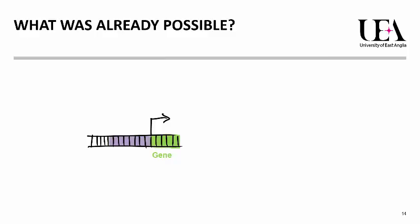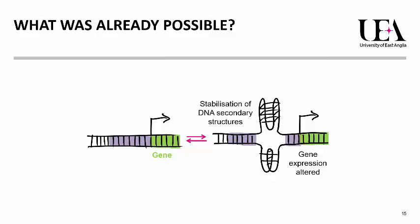We also know that iMotifs can affect how genes are read. Normal gene expression starts at a position in the genome called the transcription start site. Stabilisation of alternative DNA structures can alter how the gene is expressed, or essentially whether it is switched on or off. There are very few compounds which have been shown to affect gene expression through targeting the iMotif, because researchers thought they were only interesting as a pH switch.